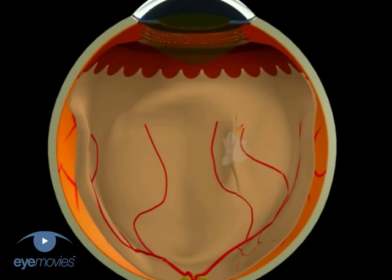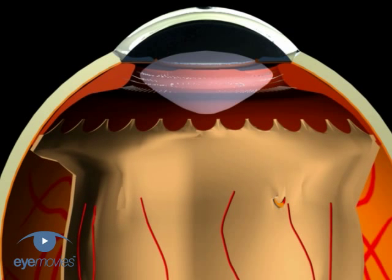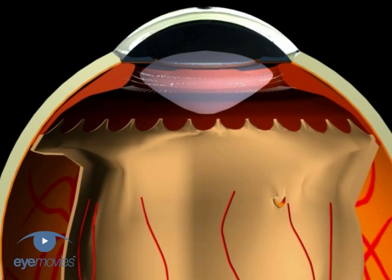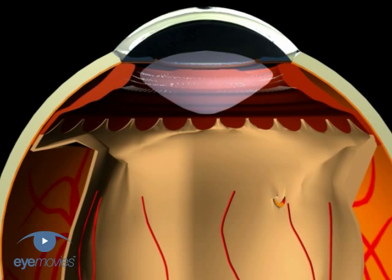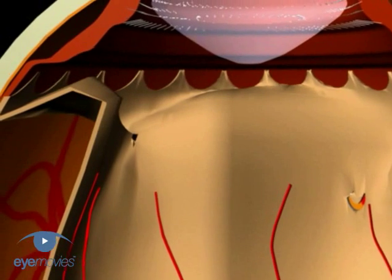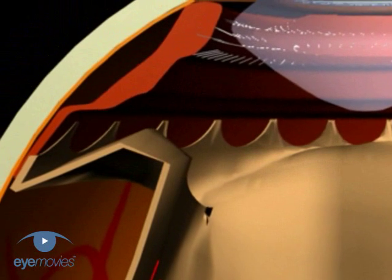In anterior PVR, contraction of membranes around the vitreous base pulls the anterior retina forward and inward, as well as causing shortening of the posterior retina and radial retinal folds. This leads to traction on the ciliary body.